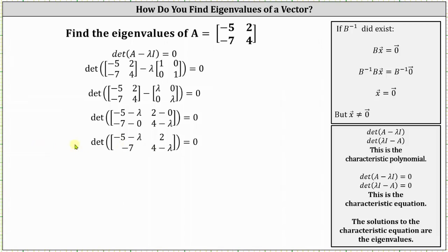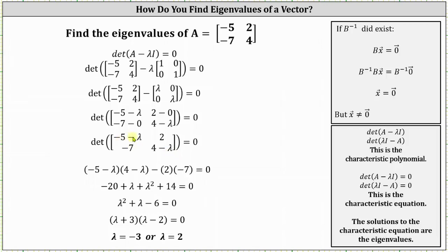The next step is to find the determinant, set it equal to zero, and solve. The determinant equals the product of negative 5 minus lambda and 4 minus lambda, minus the product of 2 and negative 7. Multiplying the two binomials we have negative 20 plus lambda plus lambda squared plus 14 equals zero. Combining like terms and writing in descending order we have lambda squared plus lambda minus 6 equals zero, which is factorable. The two factors are lambda plus 3 and lambda minus 2, giving us lambda equals negative 3 and lambda equals positive 2.